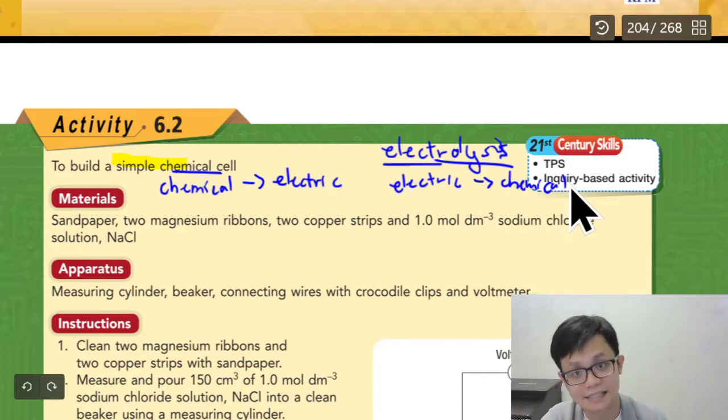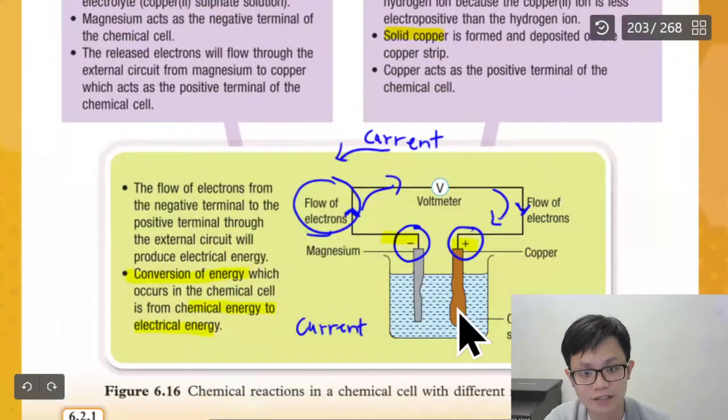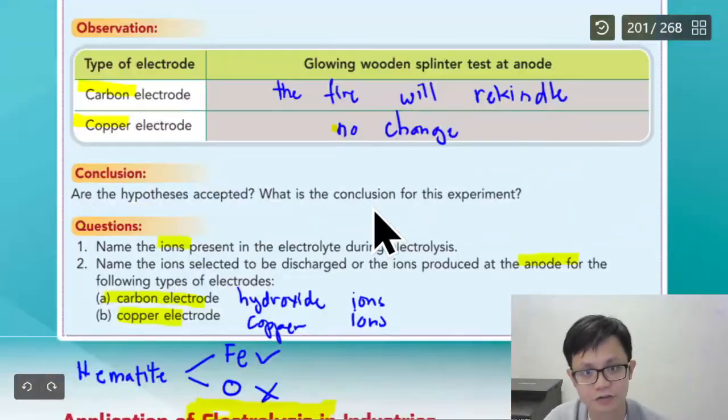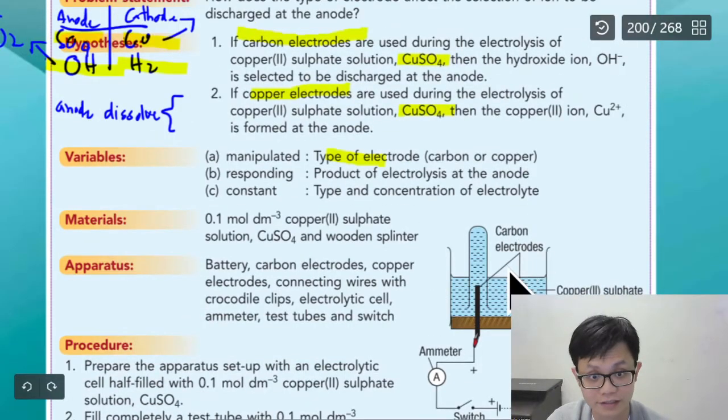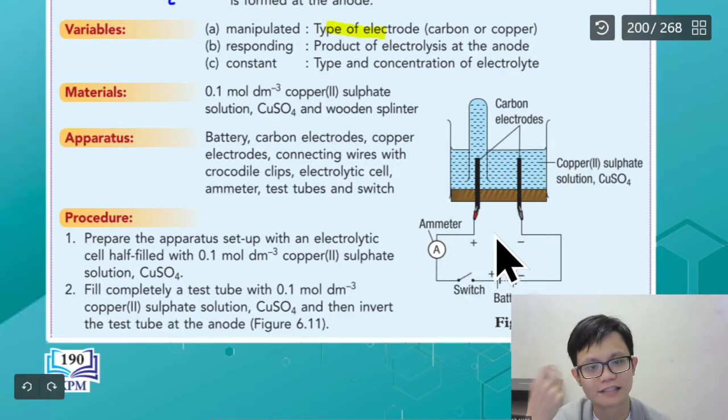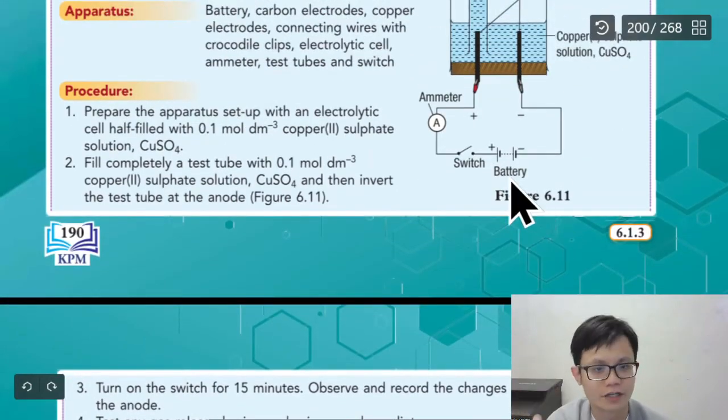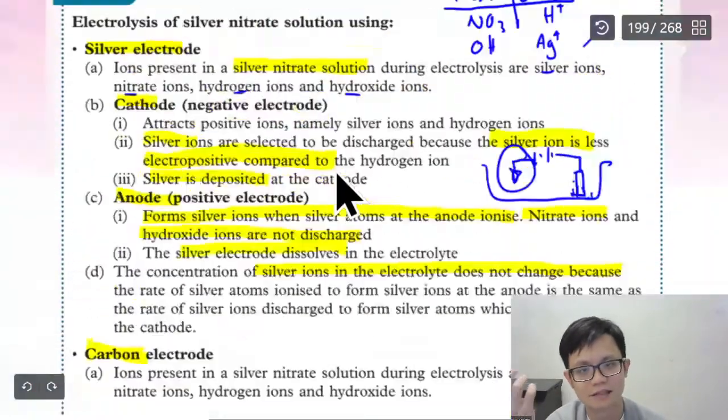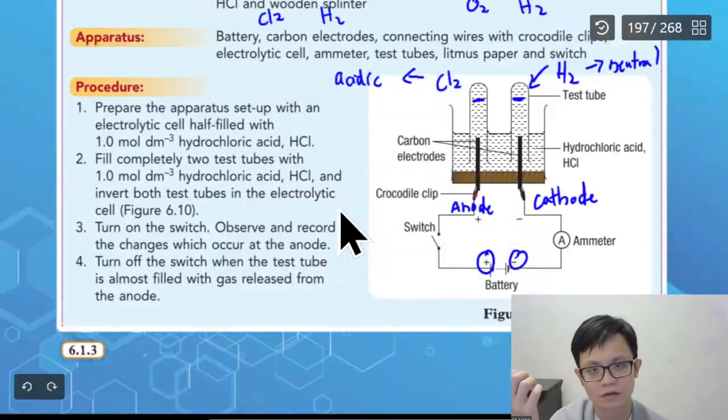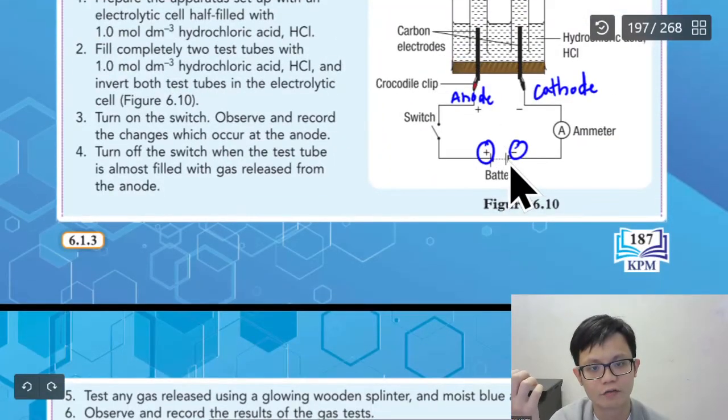We can see that always in the middle is the battery, almost in every electrolysis. Because in the electrolysis, we can see that it has a battery. It has a battery in the wire means electrolysis. Just in case you're confused, it has a battery in the wire means electrolysis.